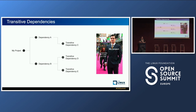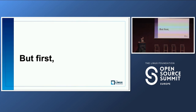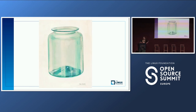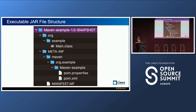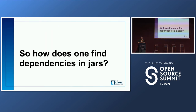Before we continue, what is a jar? A jar is basically a zip file that can include anything. If you want a specifically executable jar — the kind you can run with the java command — it has to follow a specific structure. There are two main folder chains: one that includes your classes, for example in an org/example folder structure, and the META-INF folder, which includes metadata about the jar file and several interesting files such as the pom.xml and the manifest file.